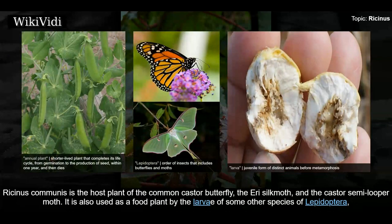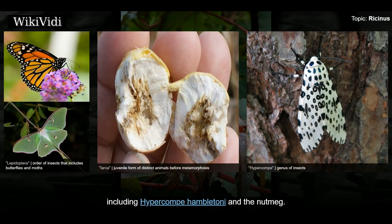Ricinus communis is the host plant of the common castor butterfly, the eri silk moth, and the castor semi-looper moth. It is also used as a food plant by the larvae of some other species of Lepidoptera, including Hypercompe amblitibia and the nutmeg moth.